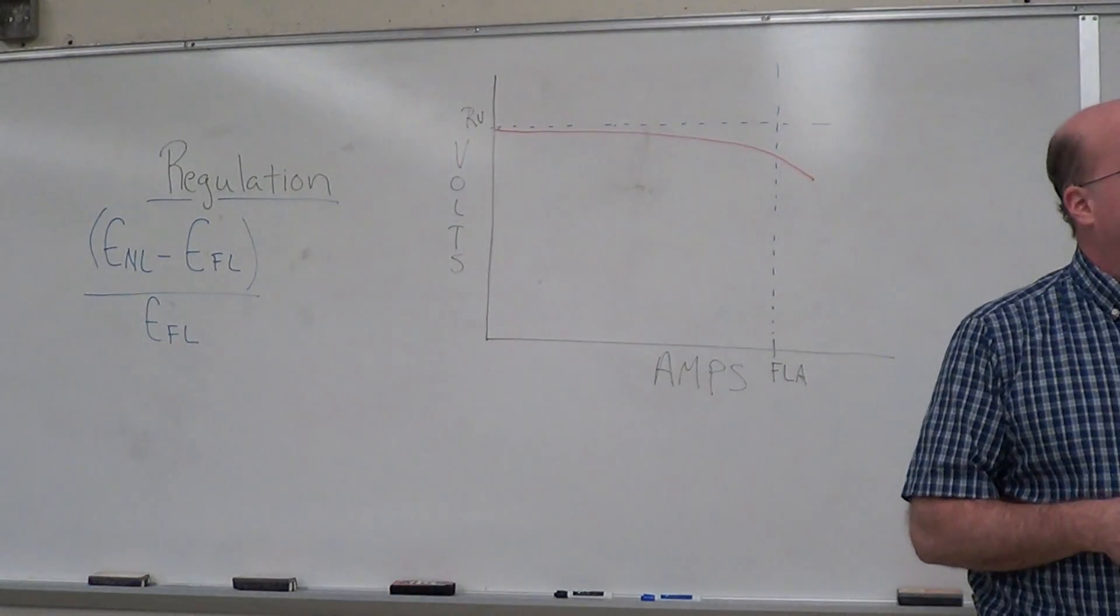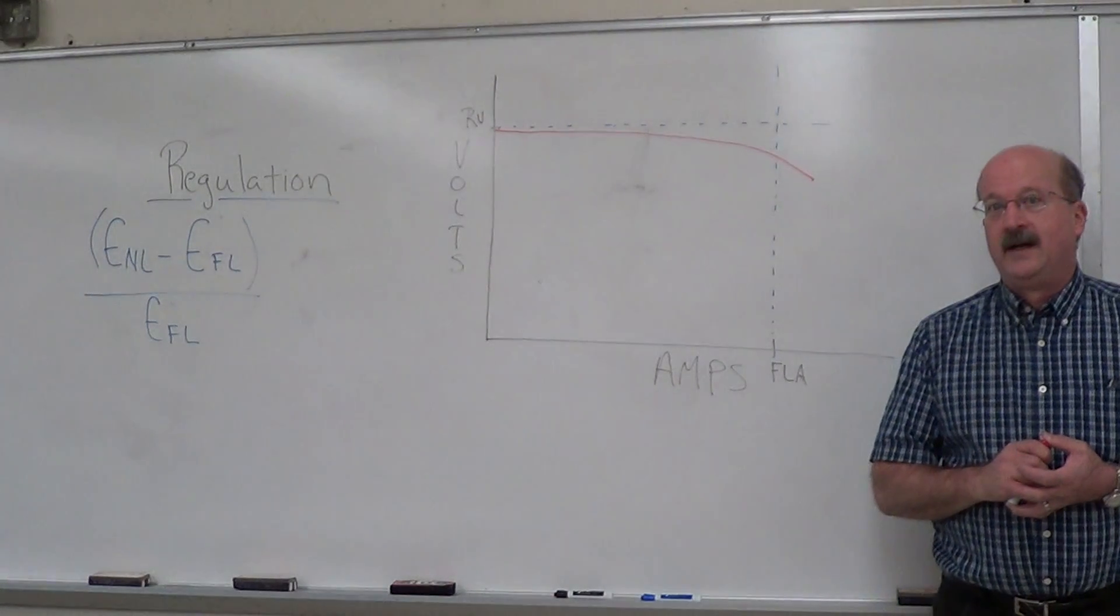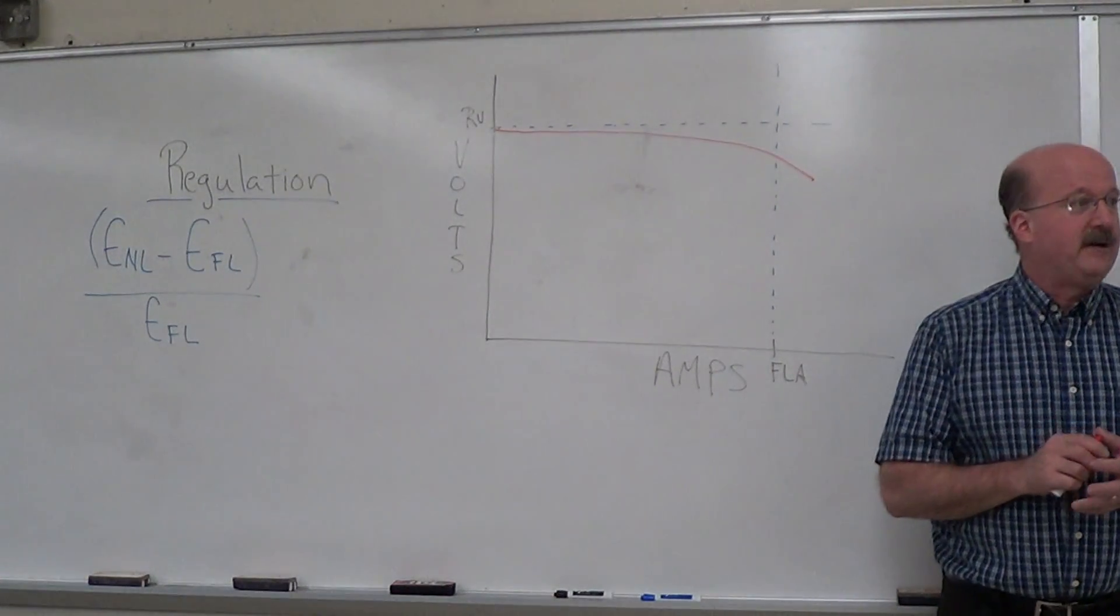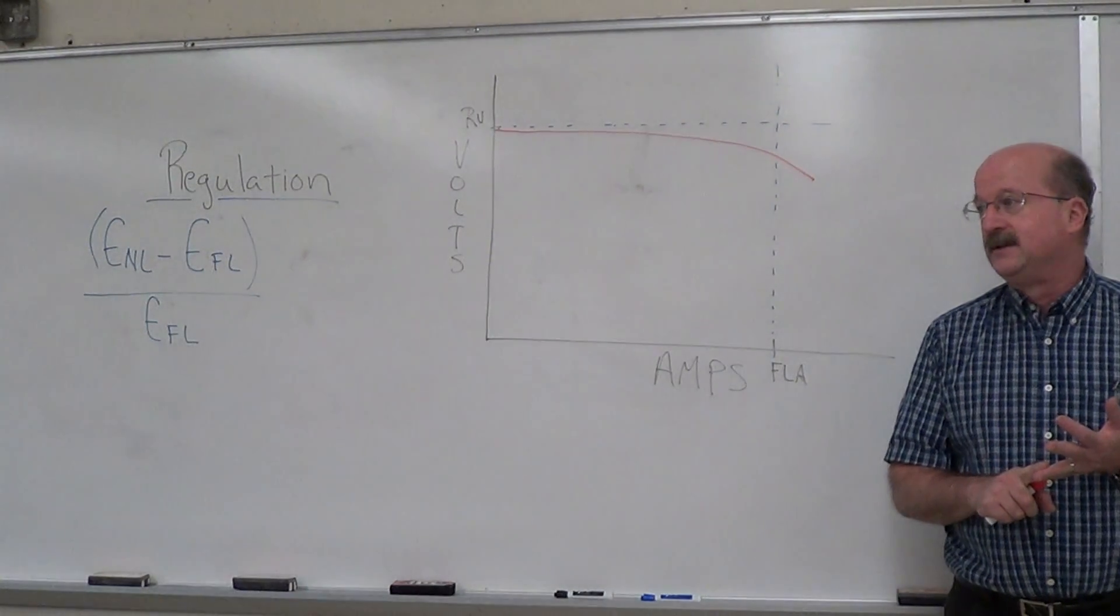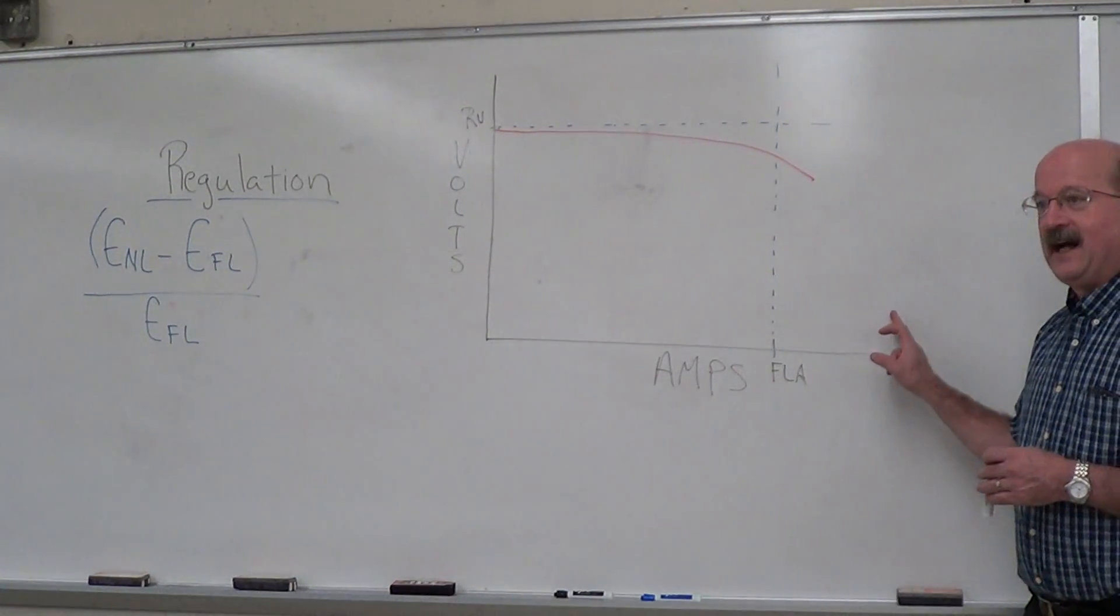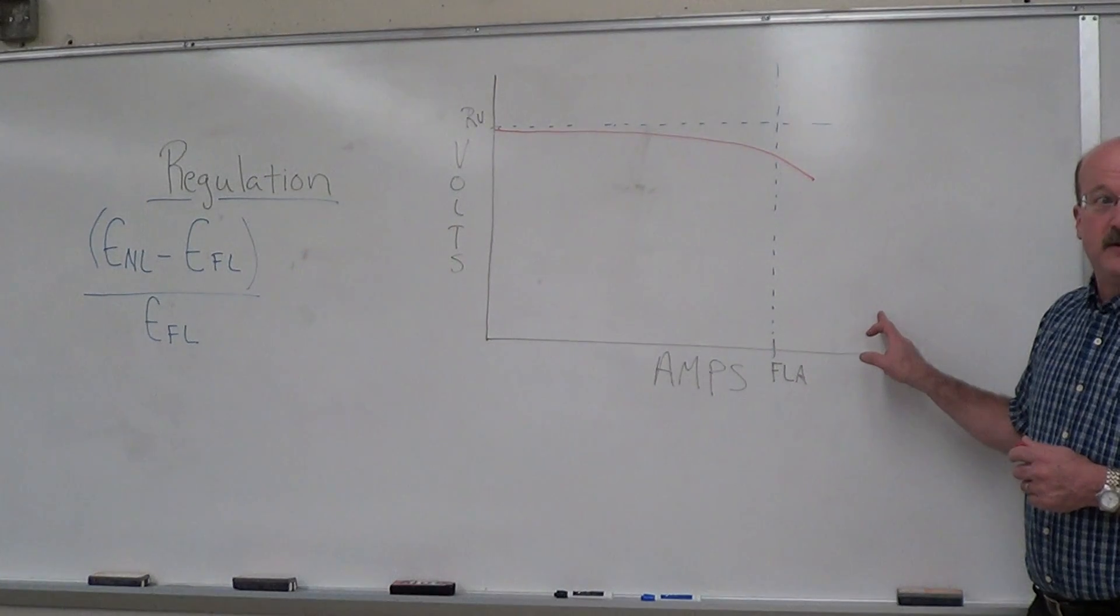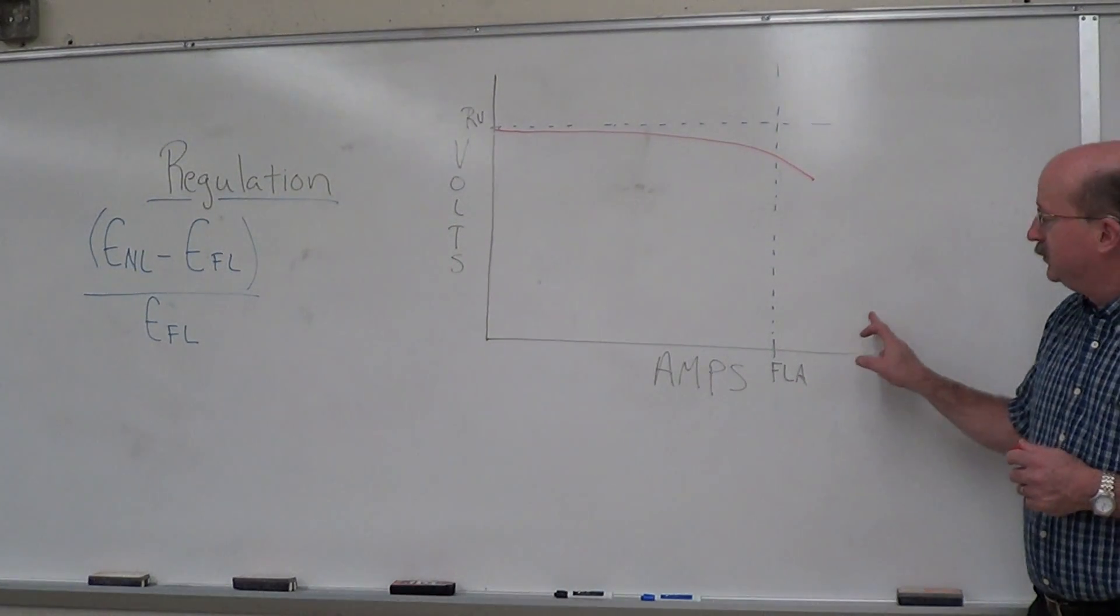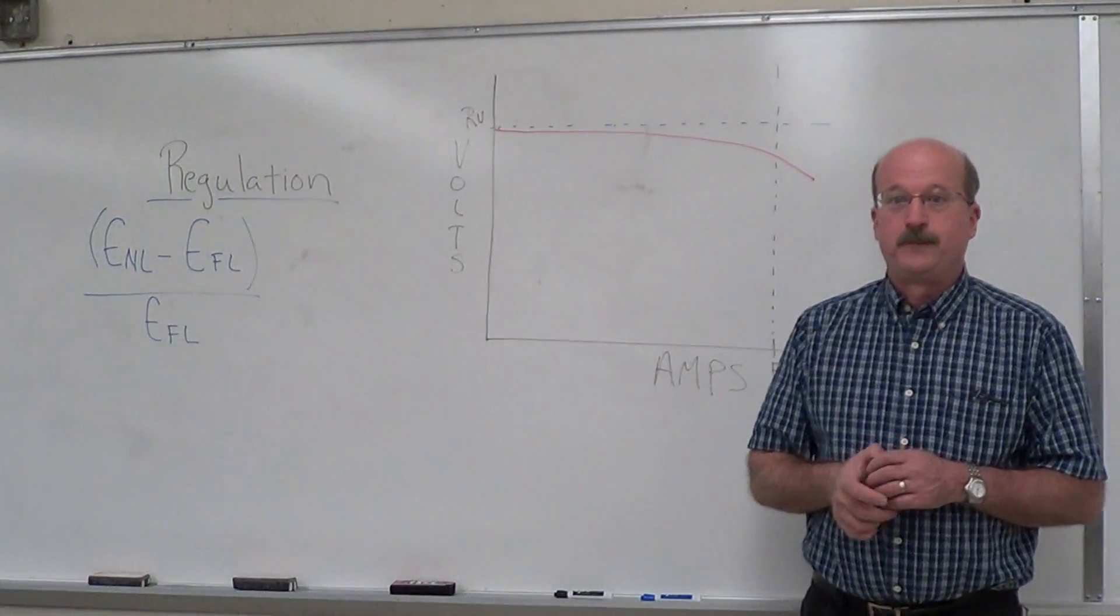Find the full-load amps looking at the nameplate on the generator. Each of your generators have a nameplate rating of full-load voltage and full-load amps. It doesn't really work if we're testing it out to 200% full-load amps if you use that value. The value you want to use is your full-load amps and your rated voltage.